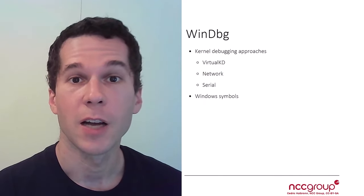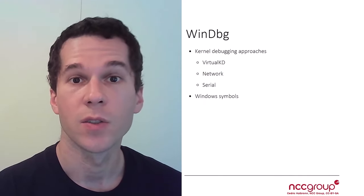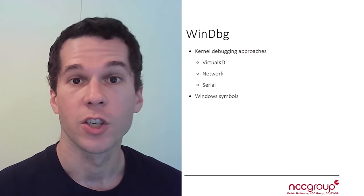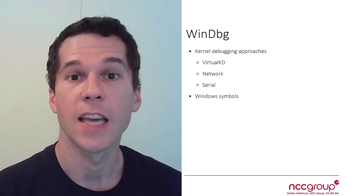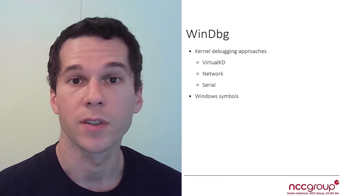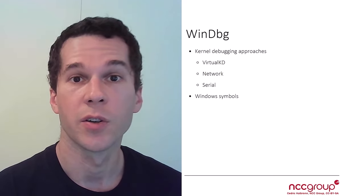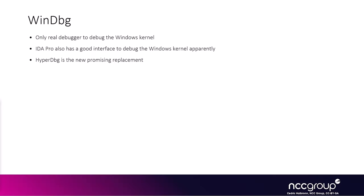Hi everyone. In this part, we're going to show you how to debug the Windows environment using three different techniques: virtual KD, network debugging, and serial port. We're also going to show you how to configure symbols. Let's get started.